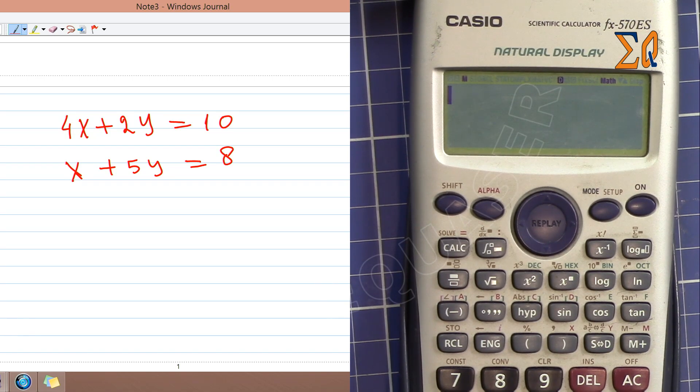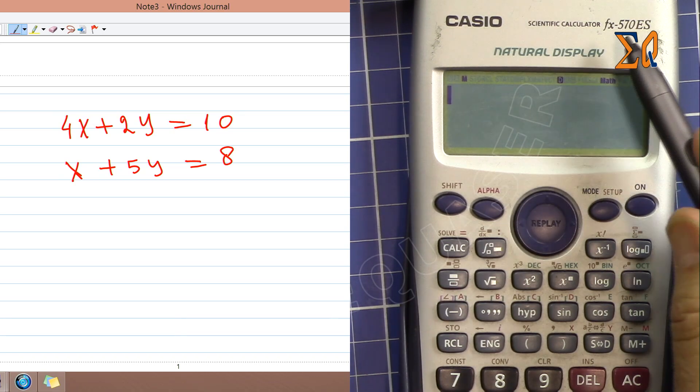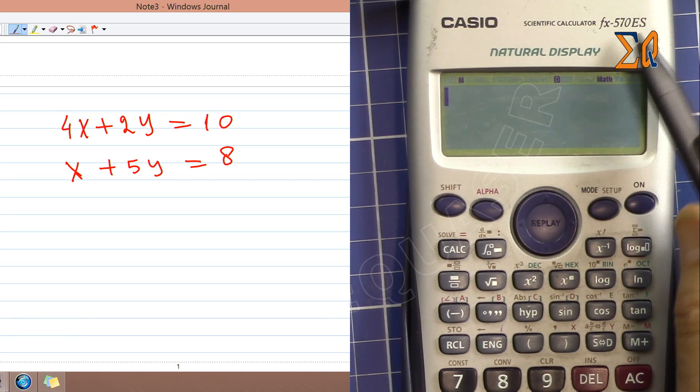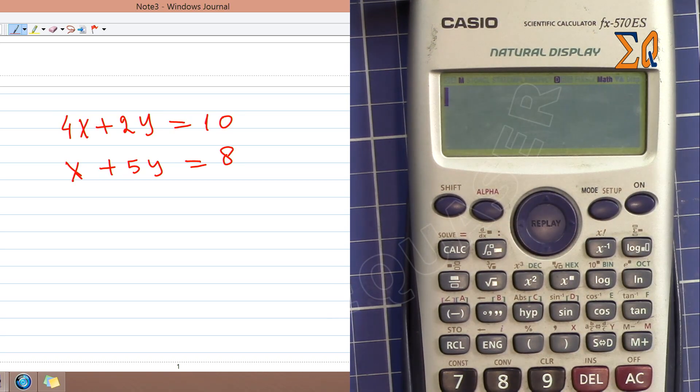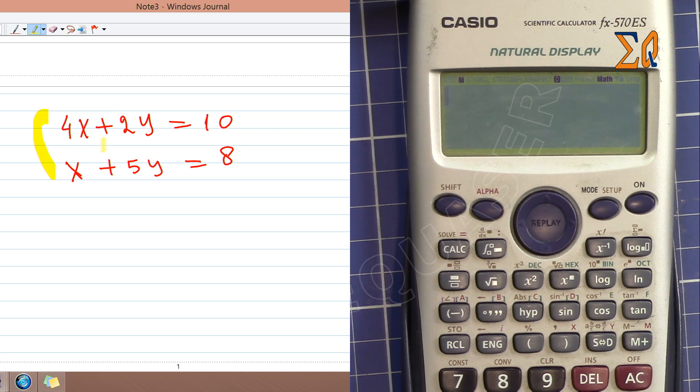Hi, welcome to Equasor. In this video, I'm going to use a Casio FX 570 ES scientific calculator to solve simultaneous equations. We have two equations here: the first one is 4x plus 2y equals 10, and the second one is x plus 5y equals 8.